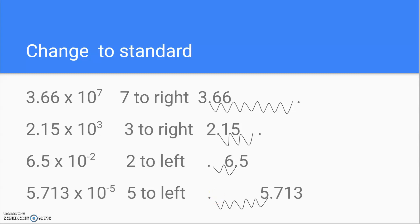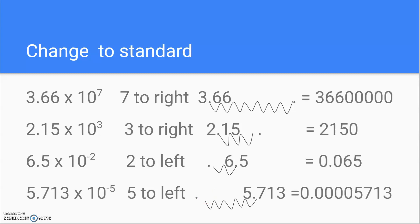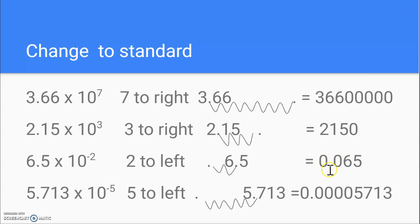So what does that look like? There we have it: 36,600,000 — I added 5 zeros to this, and this becomes the number. For the next, I had to add one zero. Notice I added an extra zero in front of the decimal, which is not necessary, but I like to do that. And here we had to move it 5 to the left, which gives me 4 extra zeros in front, and this is my number.